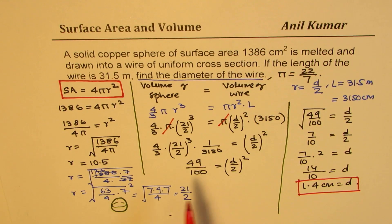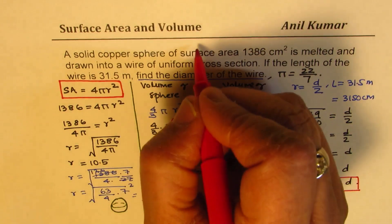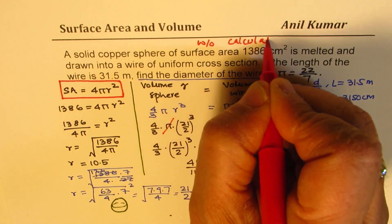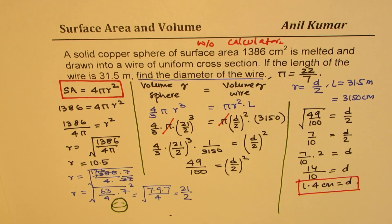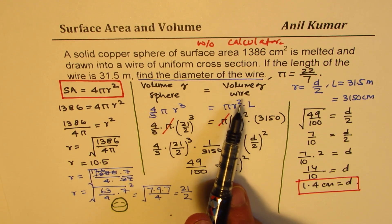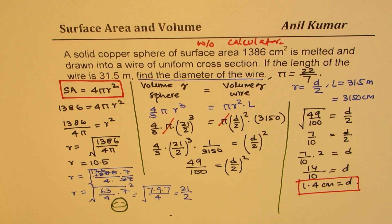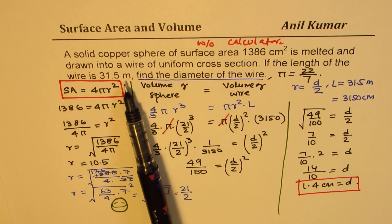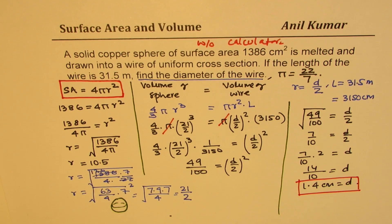The numbers are so well selected that this question could have been solved without a calculator. It might look complicated, but as you can see, it can be done. Calculator is normally allowed, so no problems at all. The strategy is: first, use the surface area to find the radius of the sphere; then equate the volume of the sphere with the volume of the wire to get the diameter. Don't forget to convert meters to centimeters to get the right answer. Feel free to write your comments, share your views, and if you like and subscribe to my videos, that would be great. Thanks and all the best.